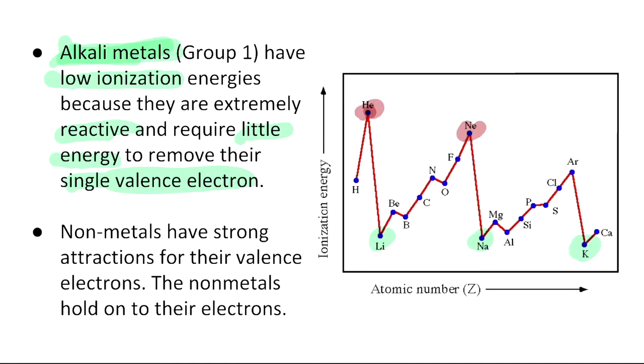Helium, neon, argon, all are noble gases. These are noble gases. So they will have the highest ionization energy in comparison to the alkali metals.